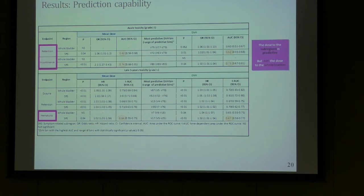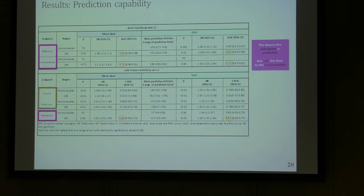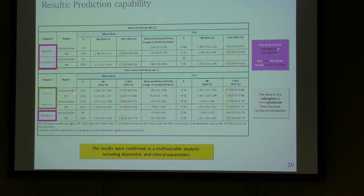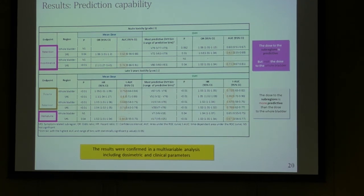The results showed that for three sub-regions, we could better predict and discriminate patients with and without toxicity when using the dose of the sub-region compared to the entire bladder, where we could not predict anything. For two other sub-regions, both the entire bladder and the sub-region were predictive, but the score when using the sub-region was slightly higher. The results were confirmed in multivariate analysis where we included clinical parameters.